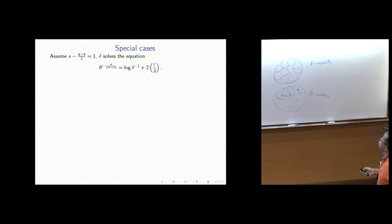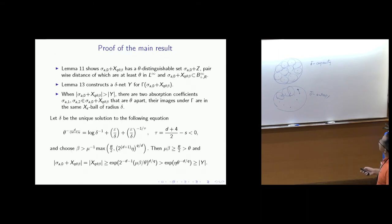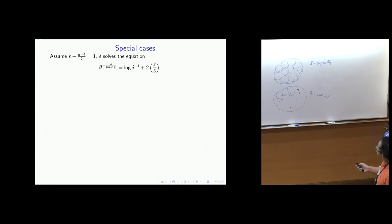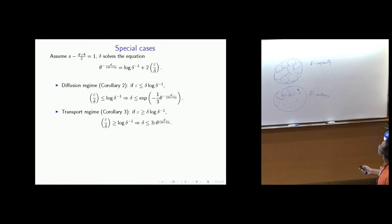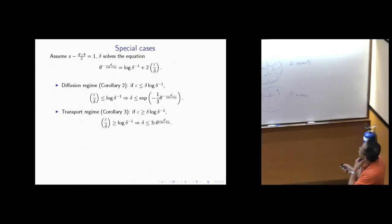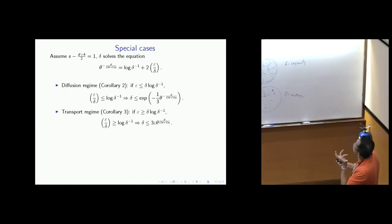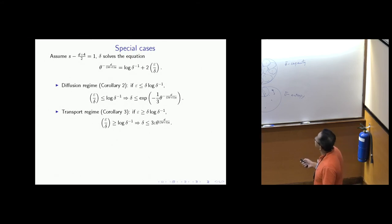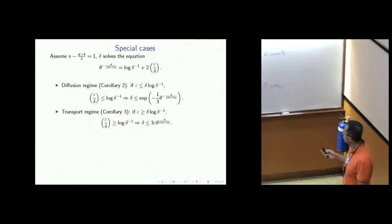In the special case, the balance simplifies to comparing epsilon over delta with a threshold. When the Knudsen number is sufficiently small — meaning you're in the diffusion regime — you get logarithmic instability. Otherwise, transport dominates and you get polynomial/Hölder-type instability.